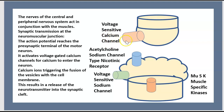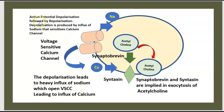Voltage-sensitive calcium channel, voltage-sensitive sodium channel, acetyl-sodium channel, and muscle-specific kinase. Action potential depolarization is followed by repolarization. Depolarization is produced by influx of sodium, which activates the calcium channel. Penetration of calcium acts on acetylcholine, which transforms into syntaxin. This leads to synaptobrevin and synapsin being employed in the exocytosis of acetylcholine.